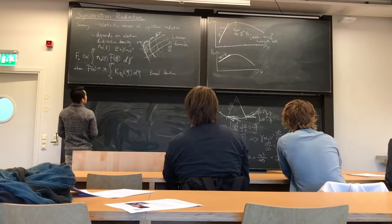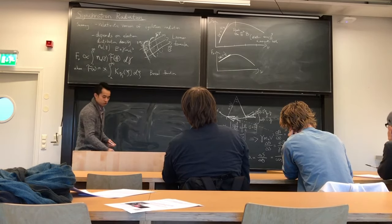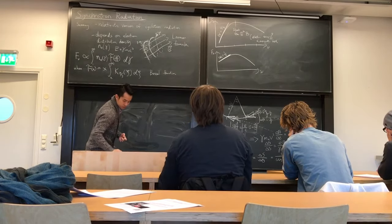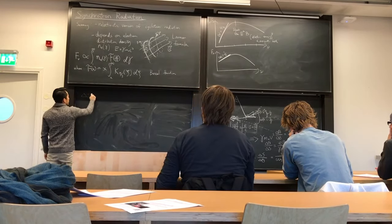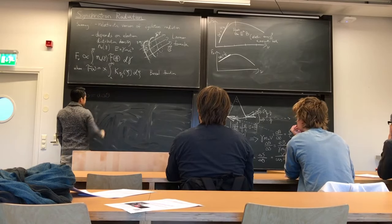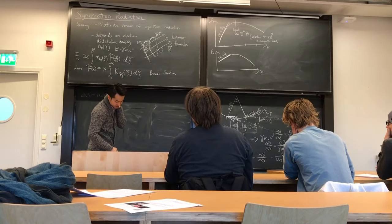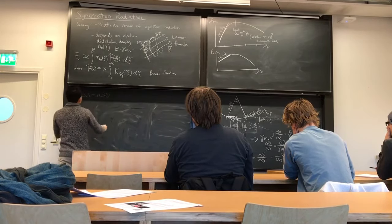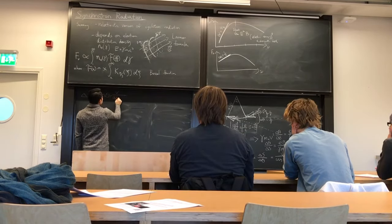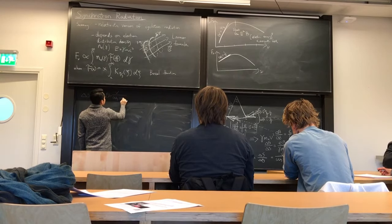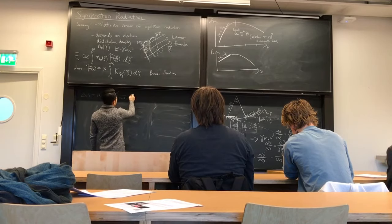There is a pitch angle between the magnetic field and the electron velocities — it's a helical motion, not circular. By very simple geometry, a equals ds/d-theta. So a equals omega_g sine alpha.